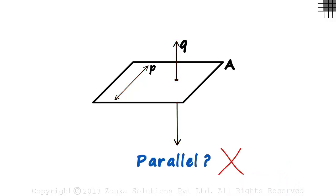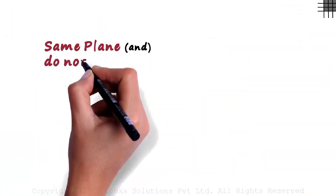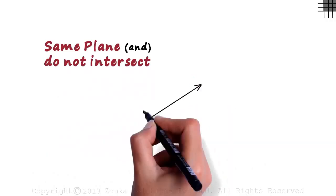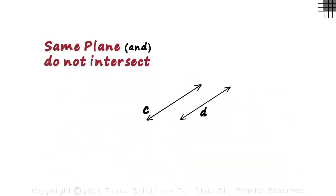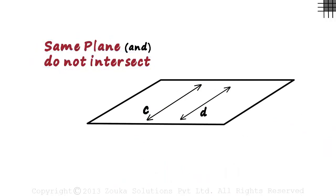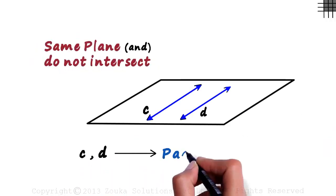Let us understand the complete definition of parallel lines. Lines which lie on the same plane and do not intersect are called parallel lines. Consider line C and line D. If they lie on one plane and they do not meet each other, then lines C and D are called parallel lines.